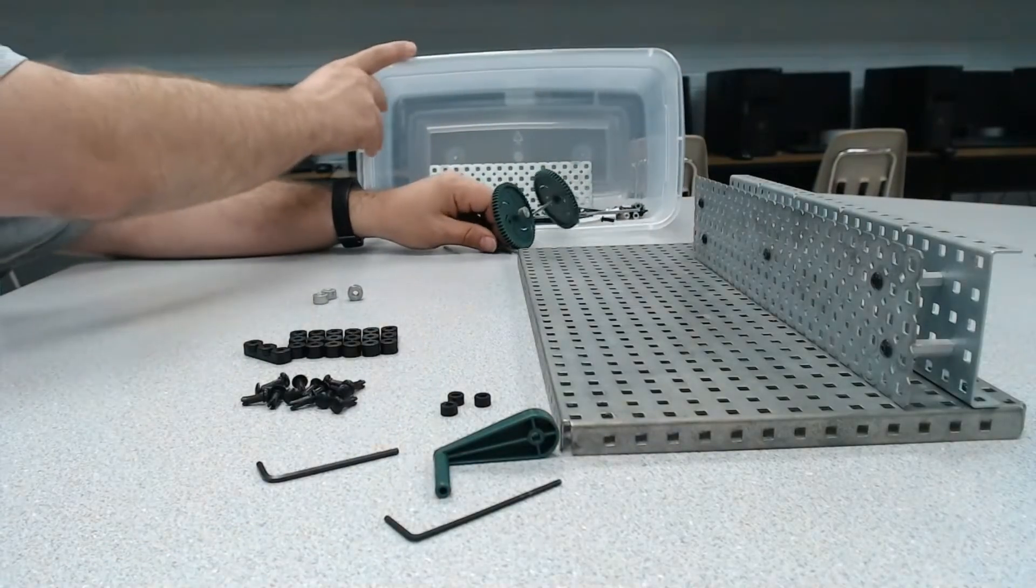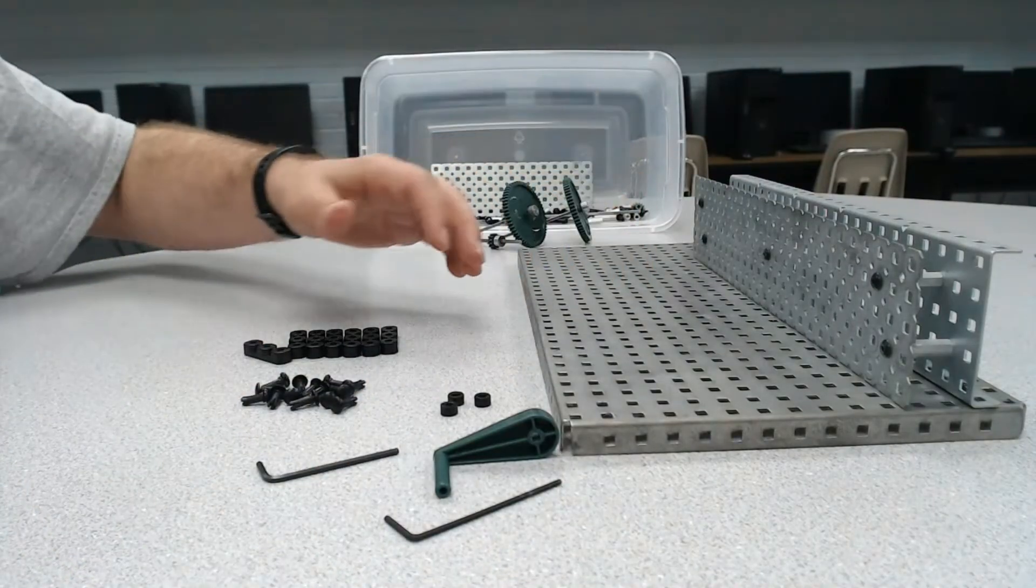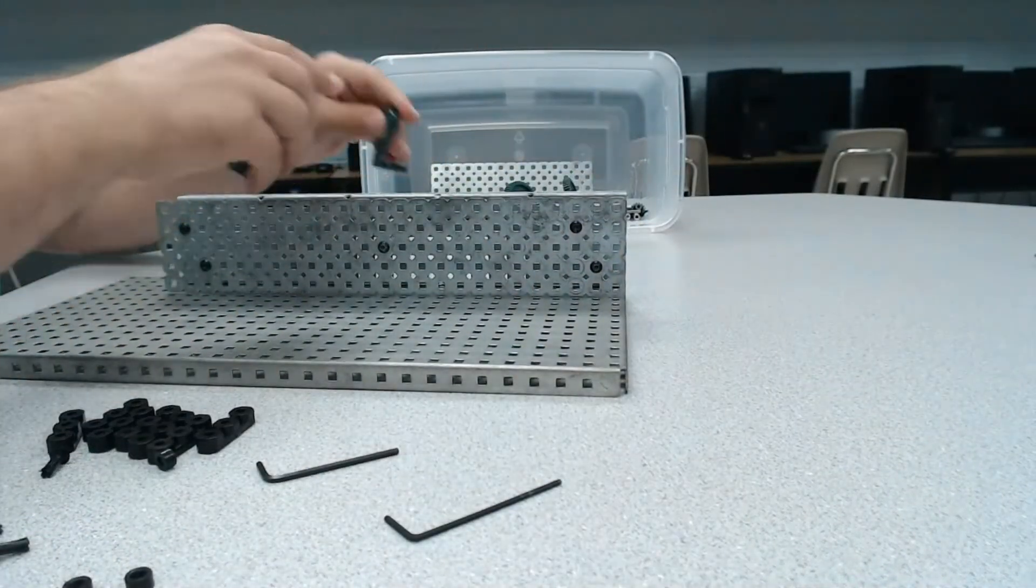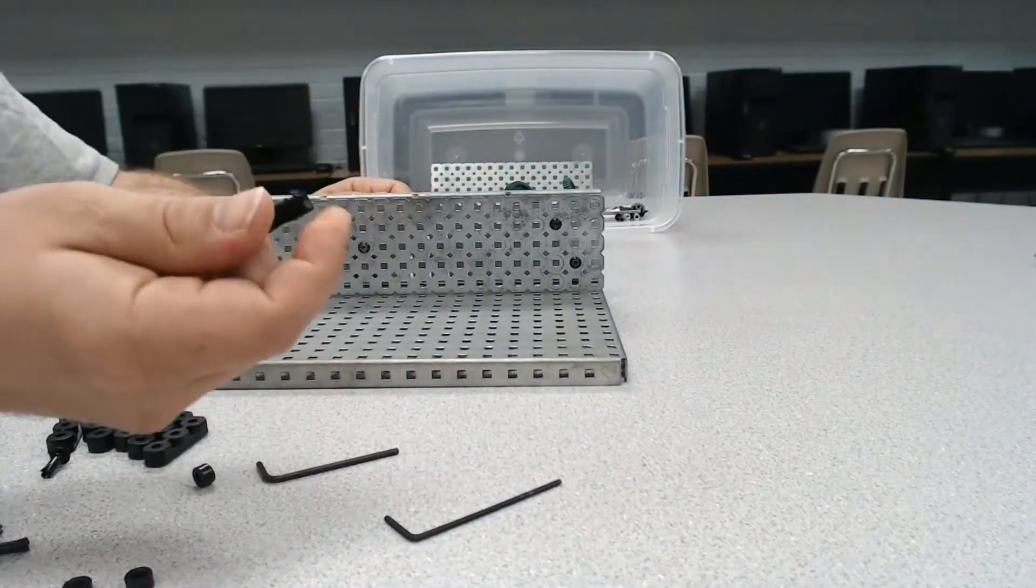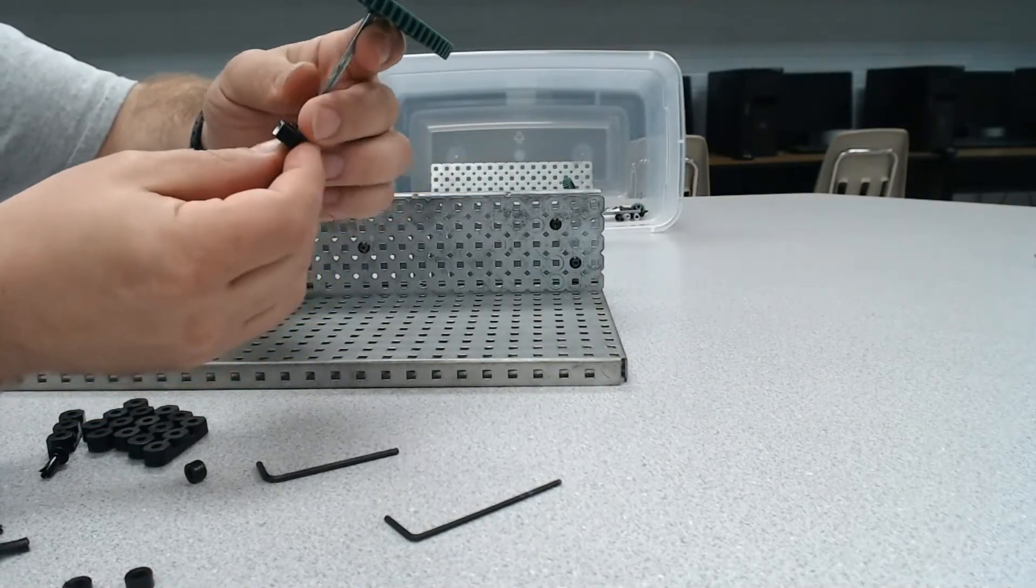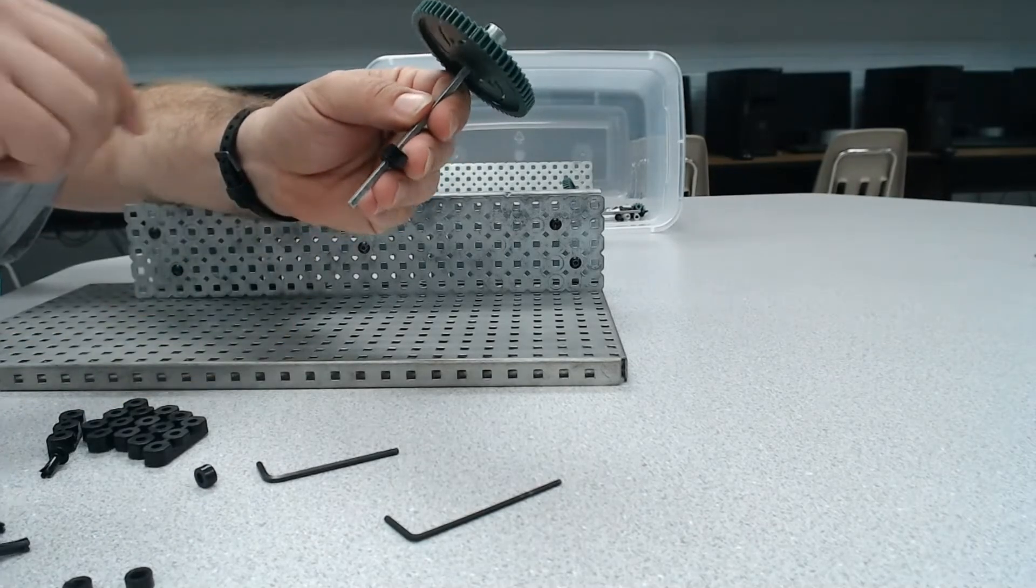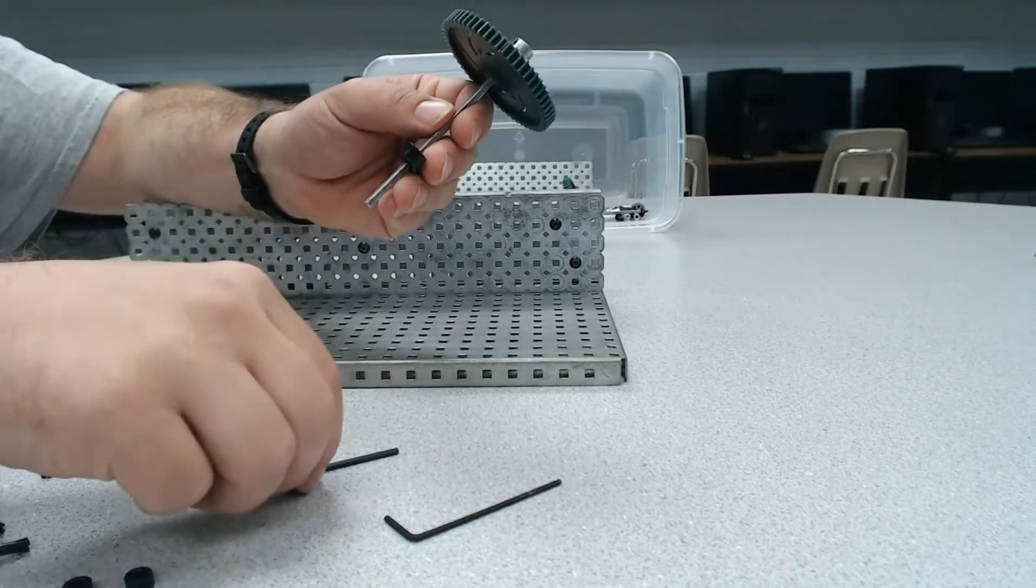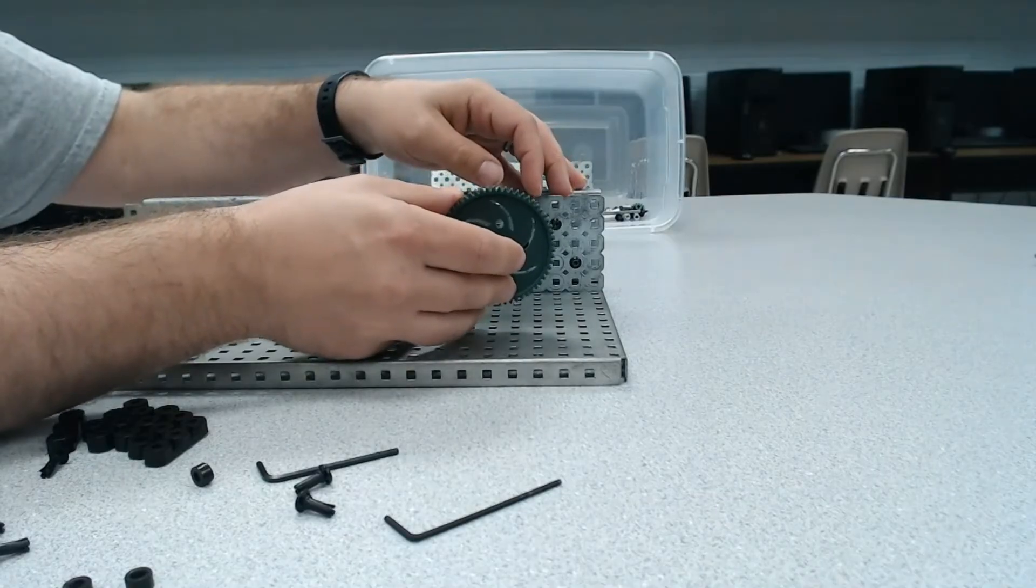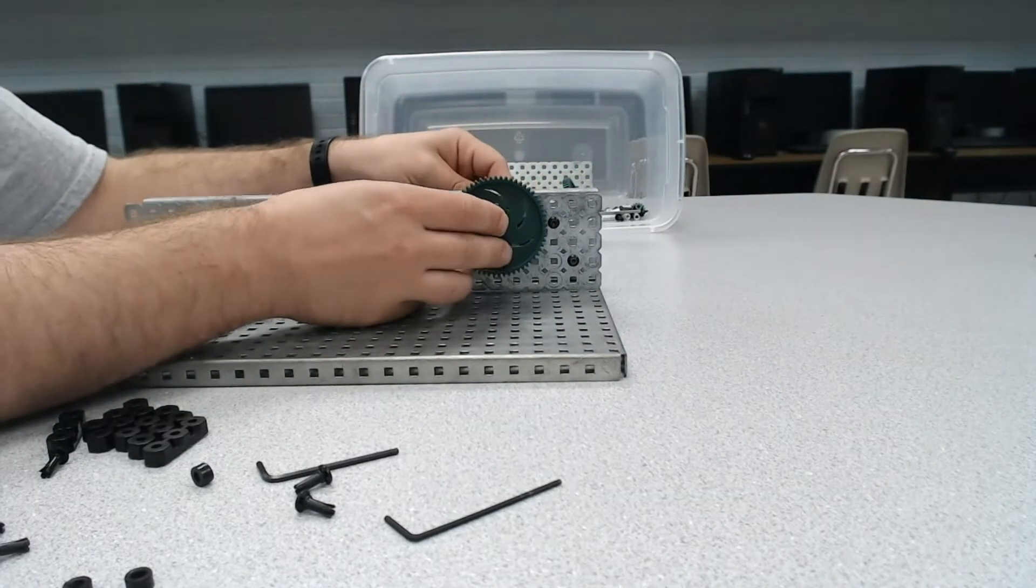I'm going to set these aside because I don't need those at the moment. We need to first get our platform ready. The way these work is one hole is filled by the axle, the other two holes by the rivets. That's why we need two rivets for every spacer. I'm going to look and see where I want to place this. Let's say I want to place it here.